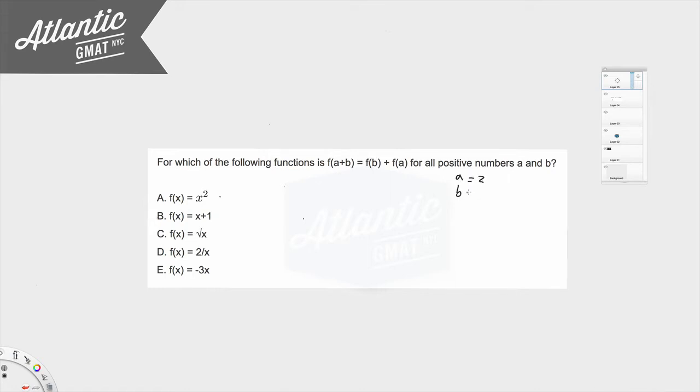Let's call A = 2 and B = 3. You can pick whatever numbers you want, just make them easy. And what you need to do is plug in 2 and 3 separately into each one of these answer choices.